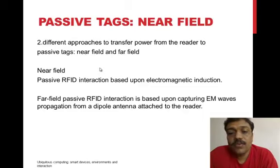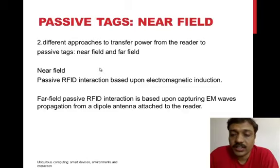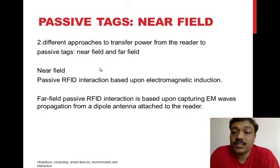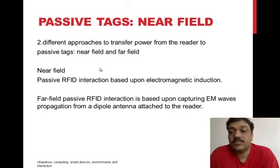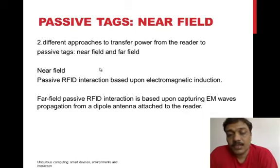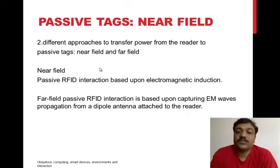In far field passive RFID, a smaller dipole antenna in the tag receives energy as an alternating voltage difference, which it can use to charge itself. Near field magnetic induction cannot reverse the process to transmit a signal from tag to reader, as the field reduces inversely with the cube of the distance, whereas that is possible in the far field case.